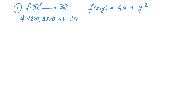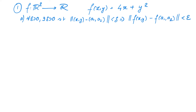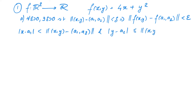To show its continuity at an arbitrary point we have to show that for every ε > 0 there exists δ > 0 such that ‖(x,y) − (a₁,a₂)‖ < δ implies that ‖f(x,y) − f(a₁,a₂)‖ < ε. Further notice that ‖f(x,y) − f(a₁,a₂)‖ is the same as |f(x,y) − f(a₁,a₂)| as the codomain is R. Now notice that |x − a₁| < ‖(x,y) − (a₁,a₂)‖ and similarly |y − a₂| ≤ ‖(x,y) − (a₁,a₂)‖.